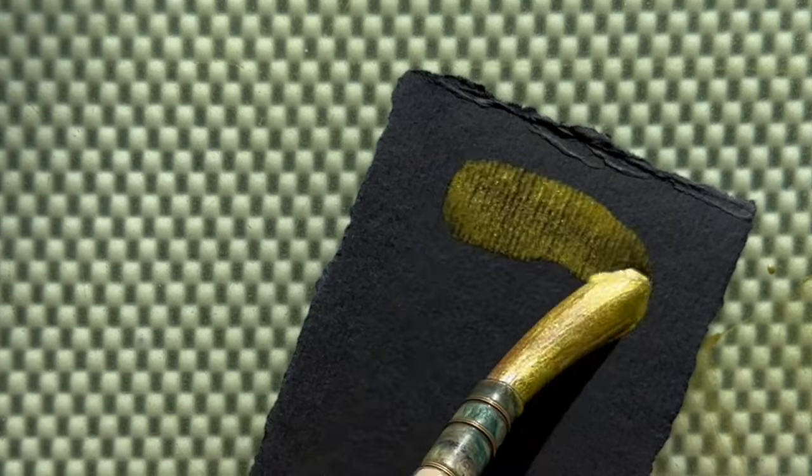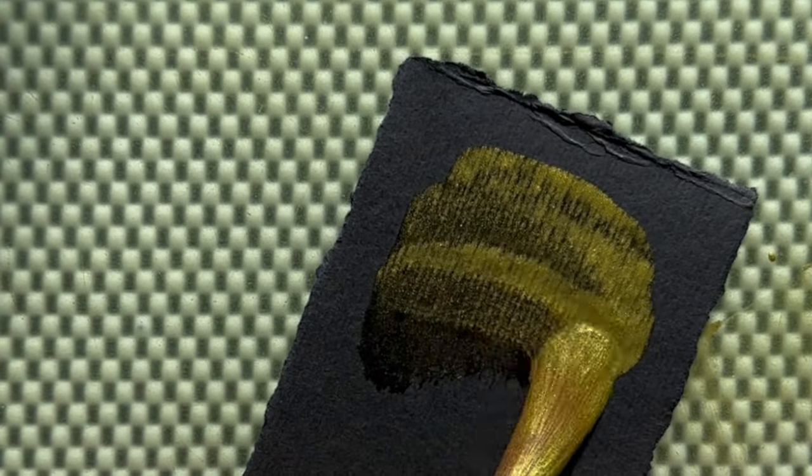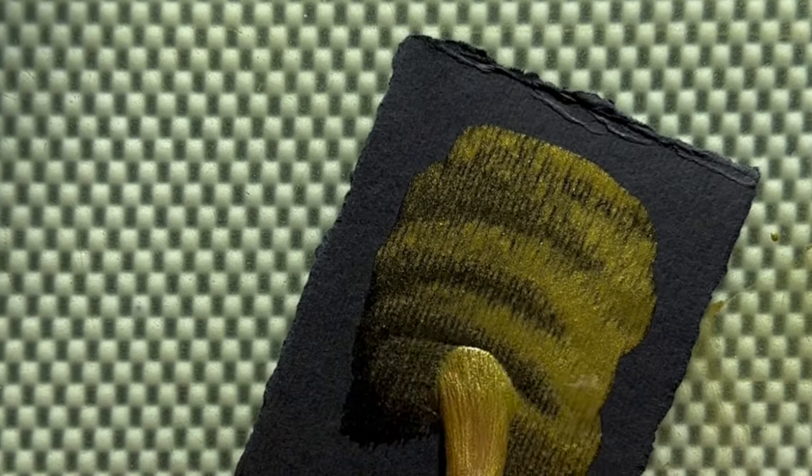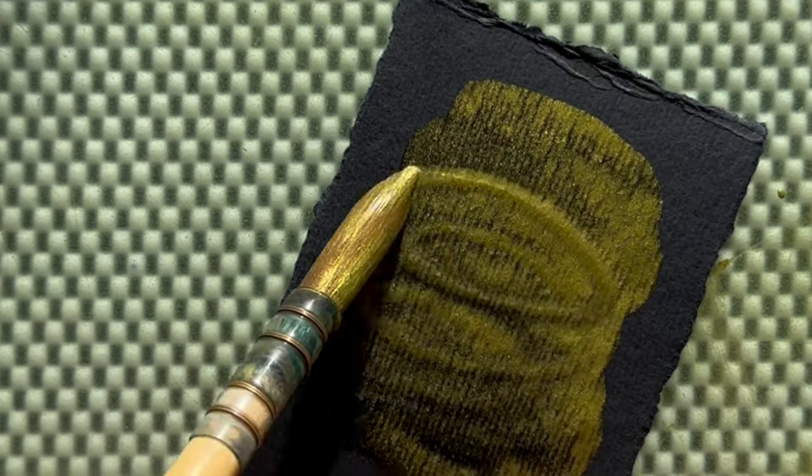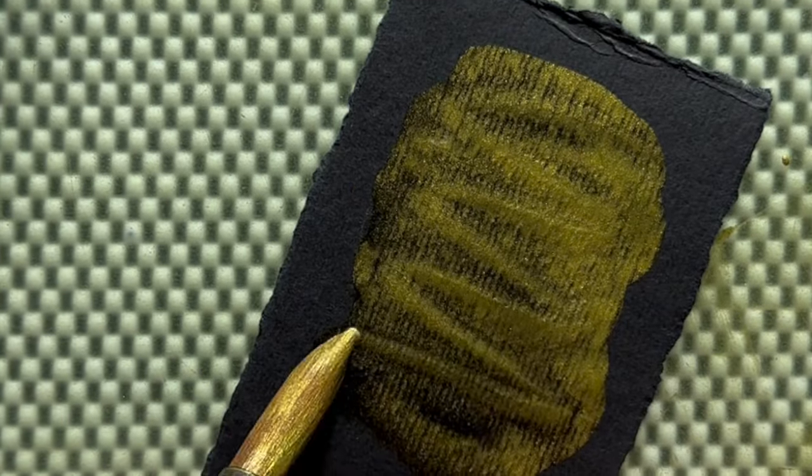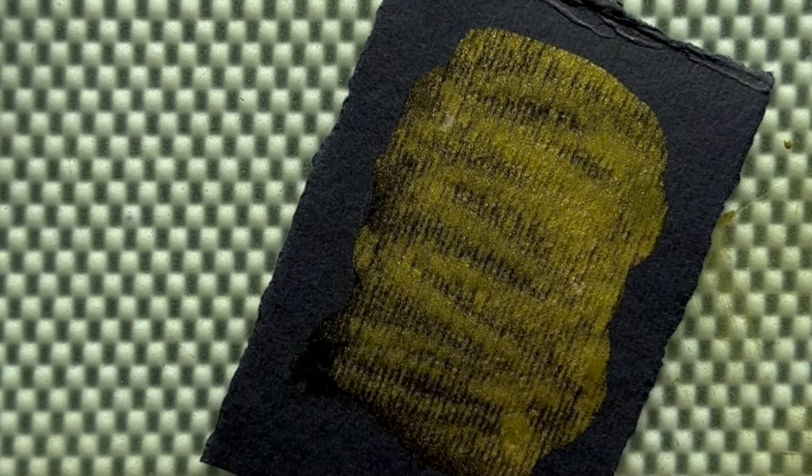But I cannot do without swatching. So as you see, the little mica particles dancing on the slab over here and dancing on the paper. And as they settle and dry, forming a beautiful metallic looking paint on your paper.